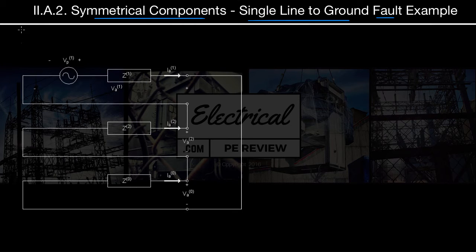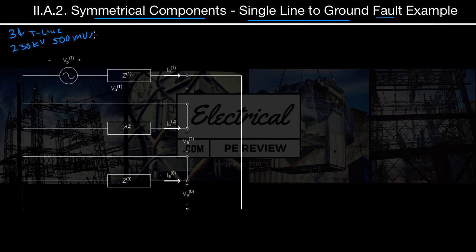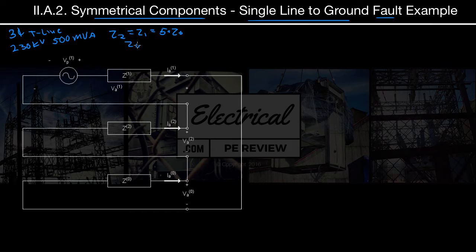Let's dive into our example. We are working with a three-phase transmission line — same 230 kV system at 500 MVA for our base power. We're going to say Z2 equals Z1, which equals 5 times Z0, and Z0 equals 0.241 per unit.